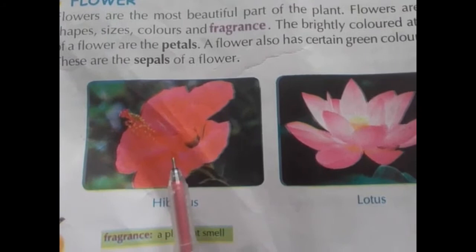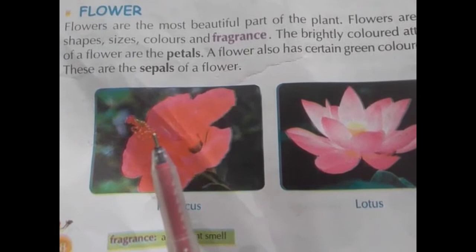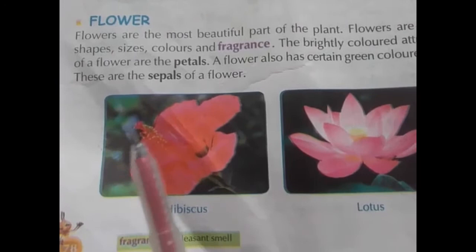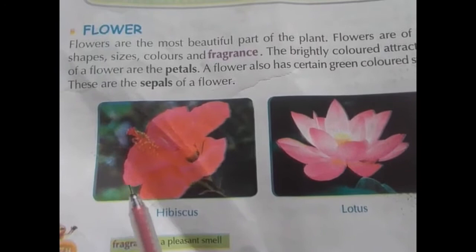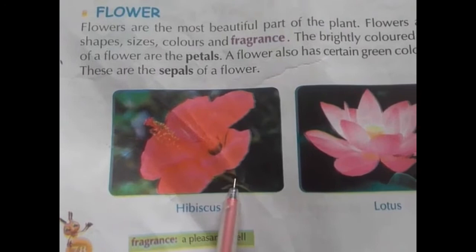If you observe hibiscus, lotus, jasmine, and rose flowers — they are different in color, different in sizes, and different in their fragrance. The brightly colored, attractive part of the flower is called petals, and the green colored part is called sepals.